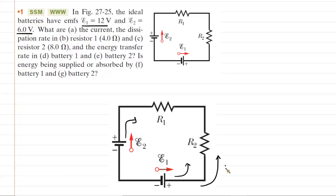We're going to draw a counterclockwise current and label it I. After doing that, we apply Kirchhoff's loop rule. You can begin the loop rule at any point within the circuit — we'll arbitrarily select a starting point. We're going to move along with the current in a counterclockwise direction, so we draw our loop direction also counterclockwise.